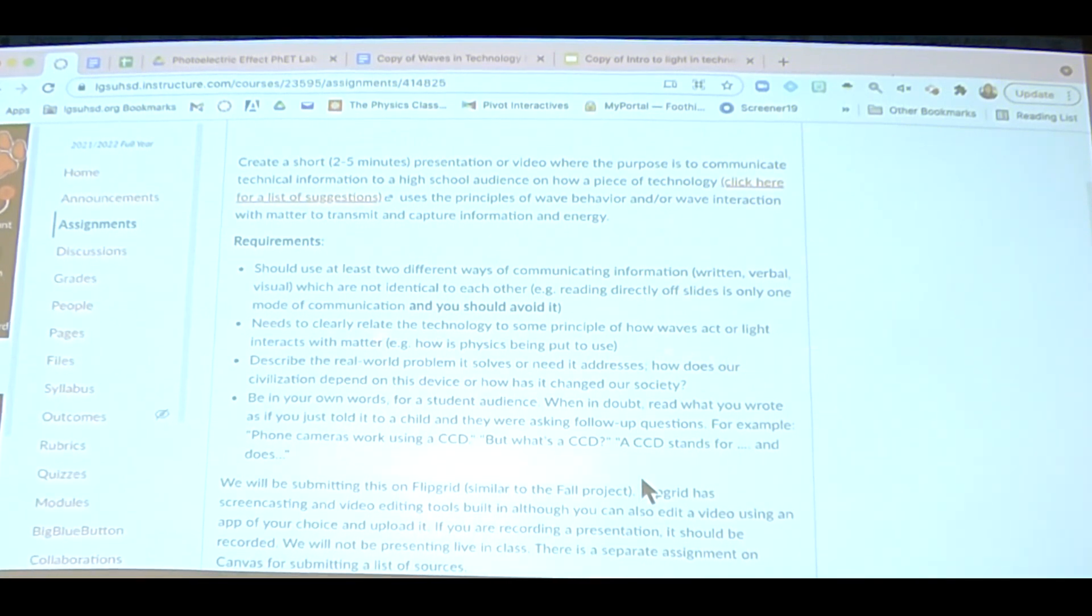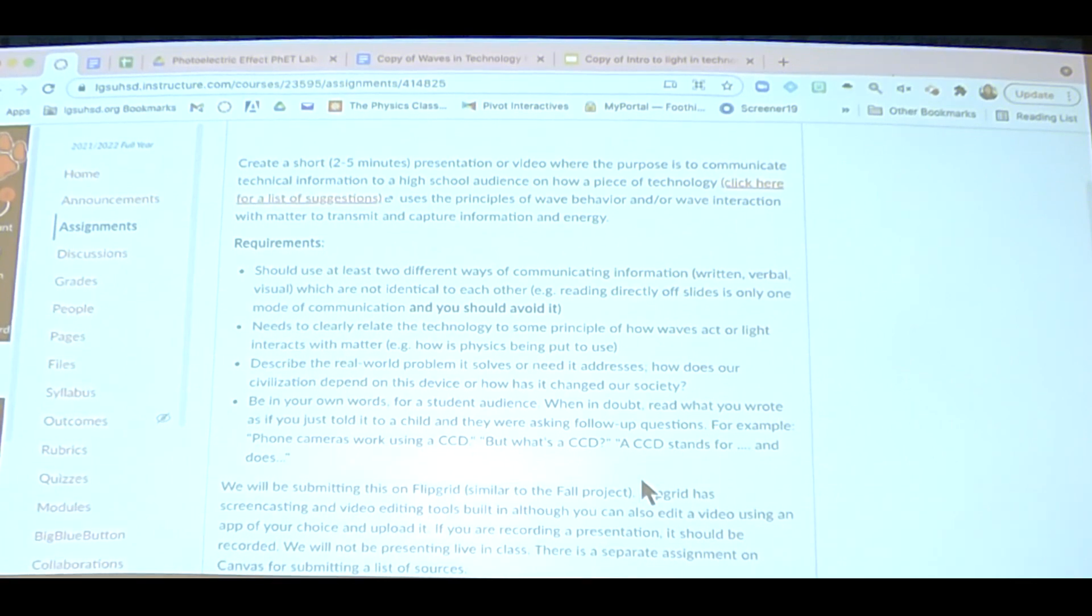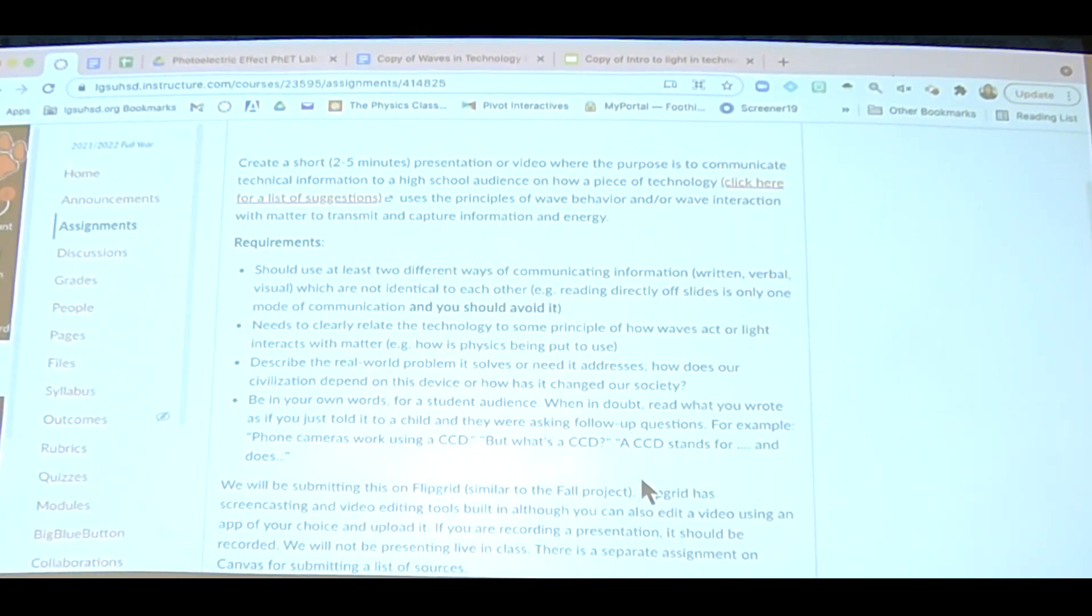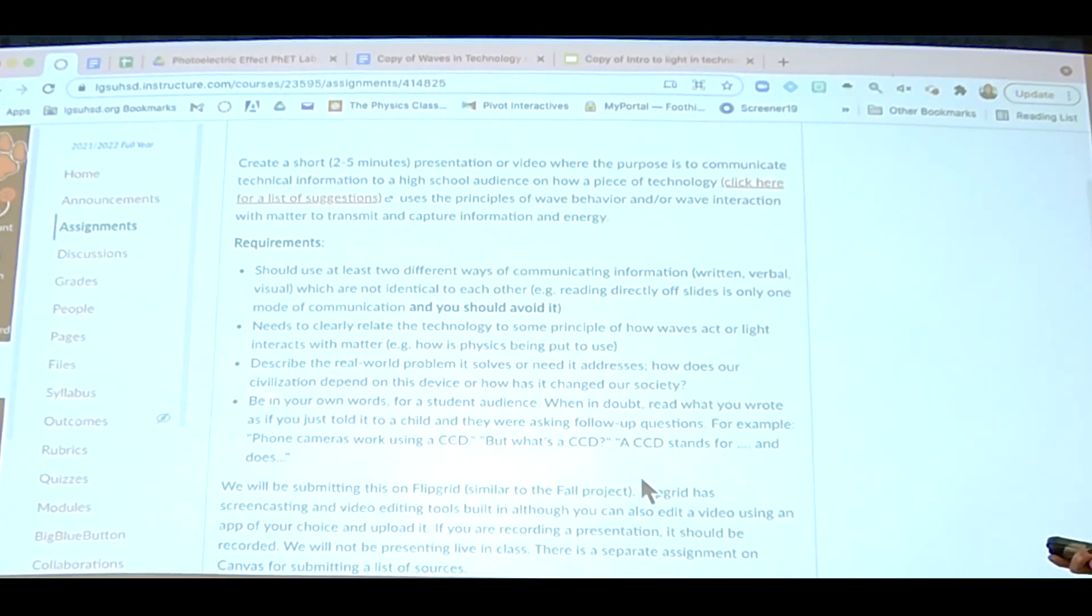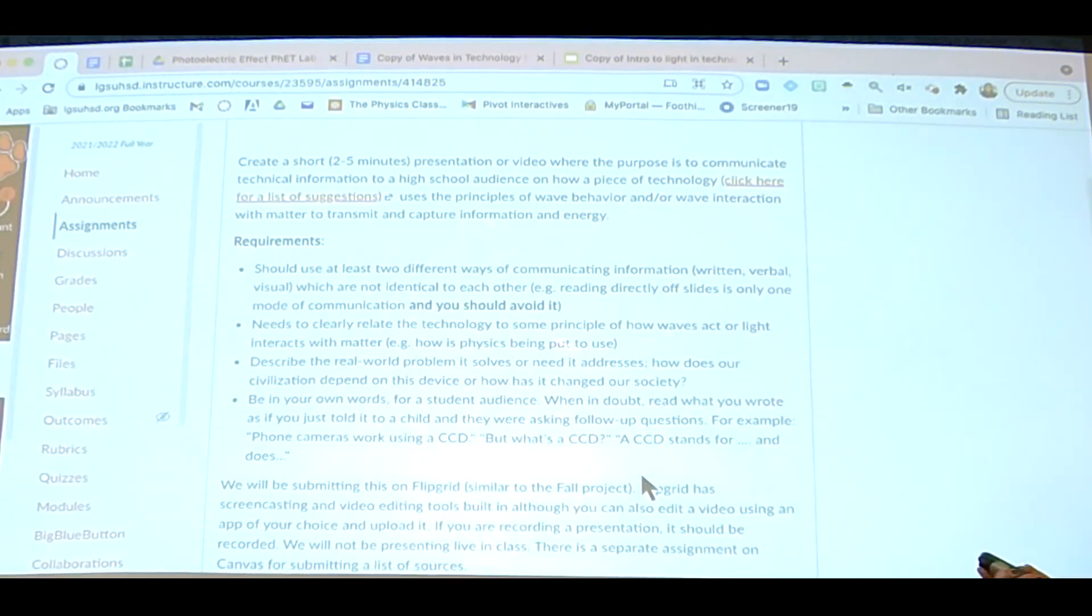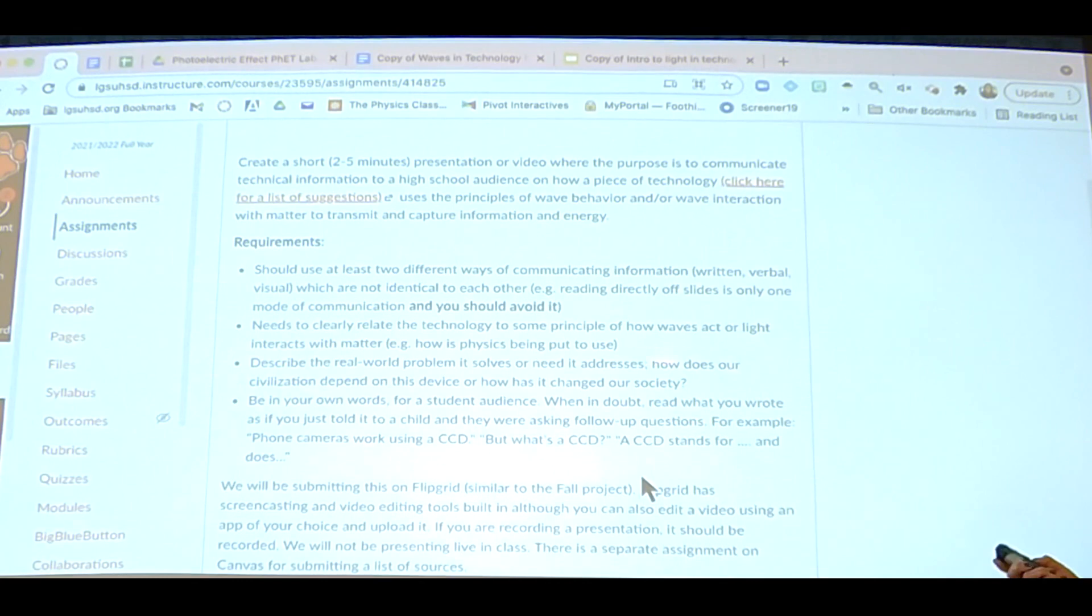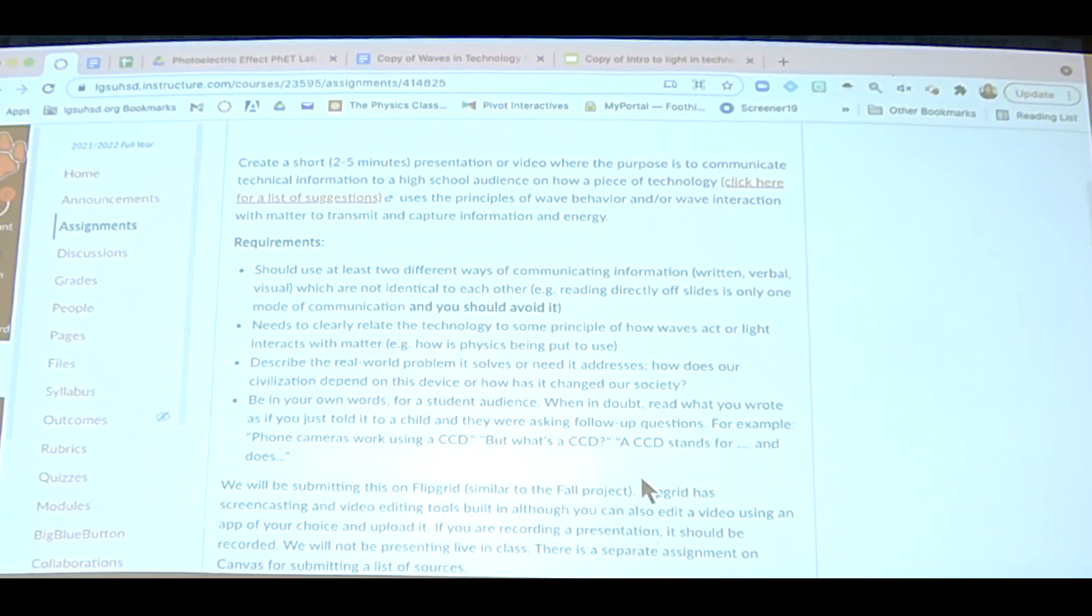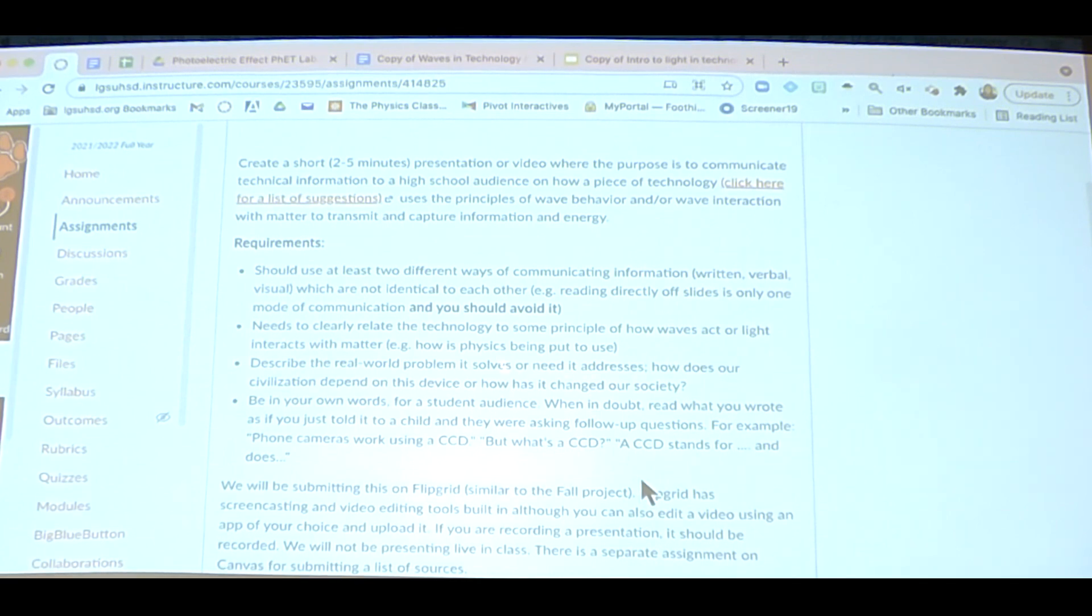One thing I want to highlight here is you're not just talking about the technology, you're not highlighting a physics concept, but you are also talking about how that technology itself is meeting a real-world problem. Obviously we develop products because there's a need for it. So what need is it meeting? How does our civilization depend on that technology and how has it changed our society? So I want you to think about real-world concept. How has it affected us? Positive or negative? How has it benefited us or maybe not benefited us? Regardless, there's a need and it met that need.